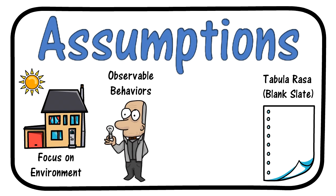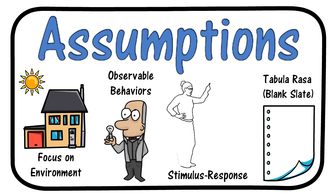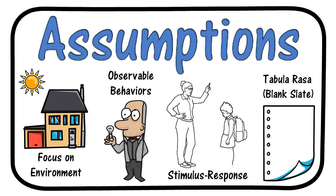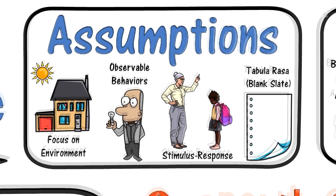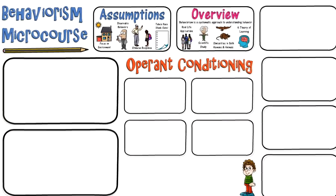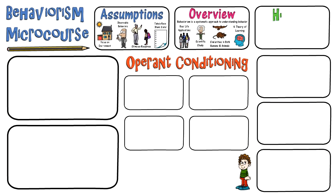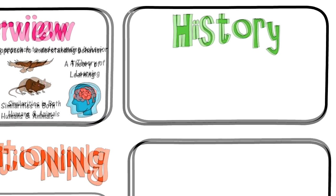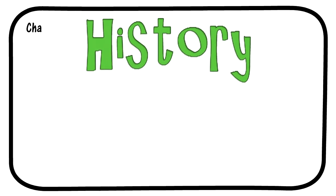Stimulus response theory is also a key concept. It is essentially the idea that a behavior will not exist without a stimulus of some sort. The behavior manifests from an interaction between stimulus and response. The next topic of study is the historical contributions to behaviorism. We'll look at some of the most influential individuals, beginning with Charles Darwin.